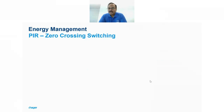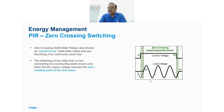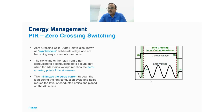In zero-crossing switching, when the control voltage detects movement and sends a signal to the relay, the relay waits — in microseconds or nanoseconds — until the AC curve reaches zero before switching on. This minimizes surge currents and is ideally suited for lamps with ballast for on/off function.